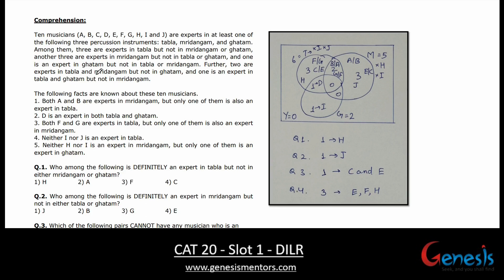Looking at this caselet, it says 10 musicians A through J are expert in at least one of the following three percussion instruments: Tabla, Mridangam, and Ghatam.